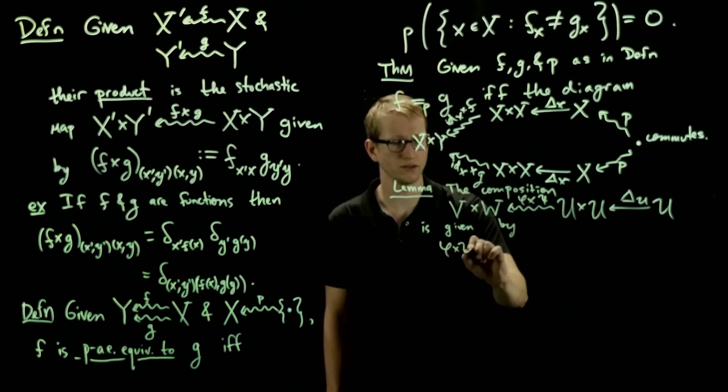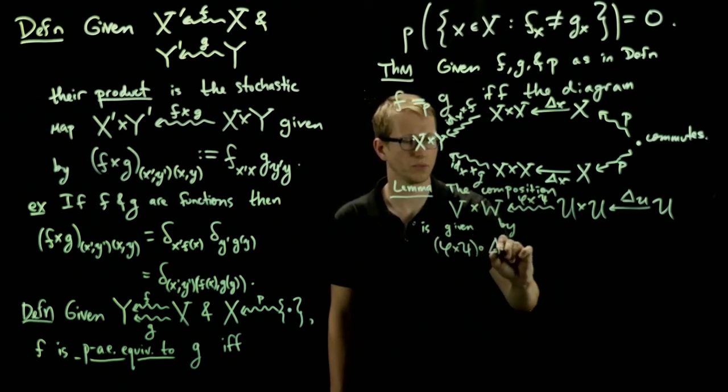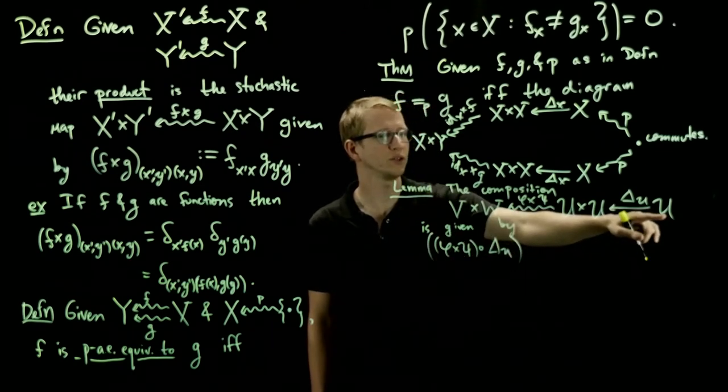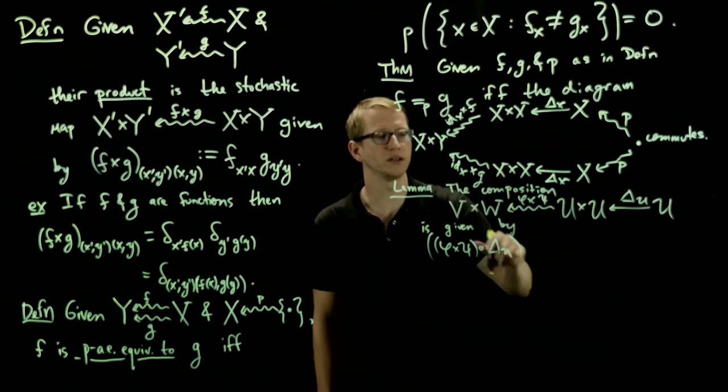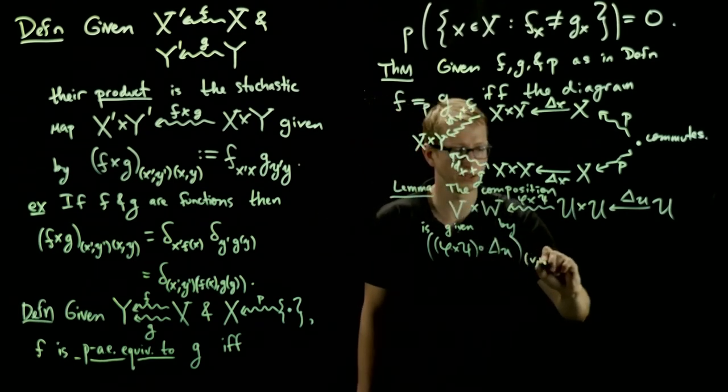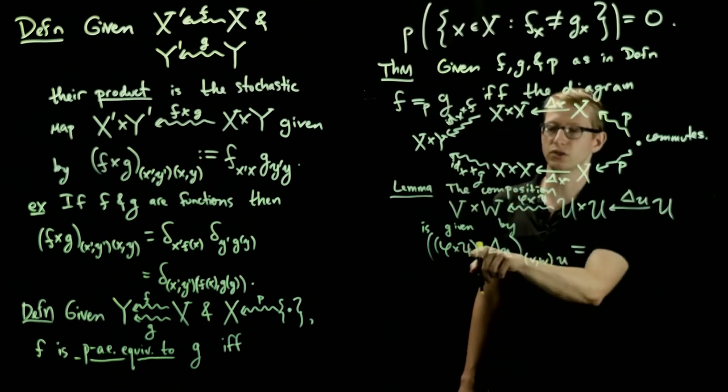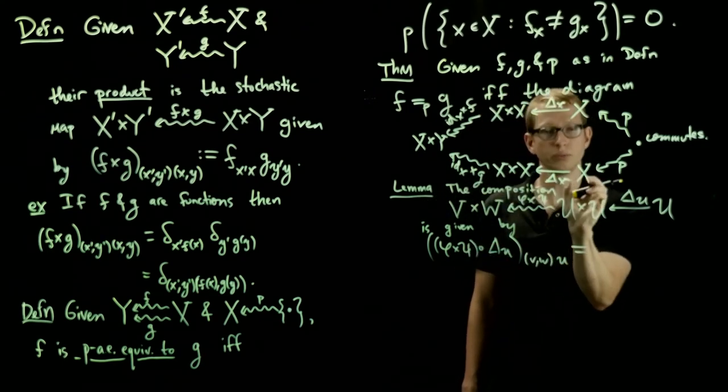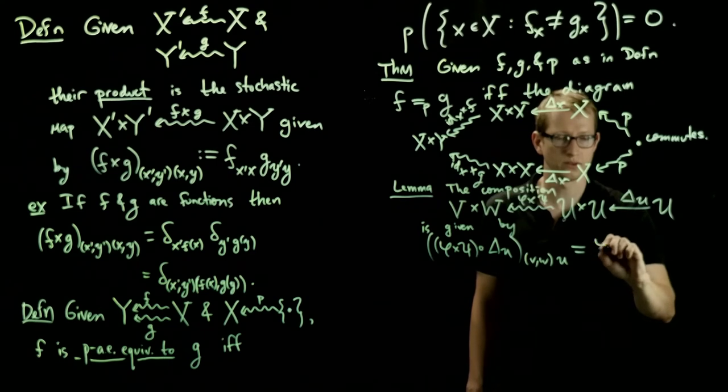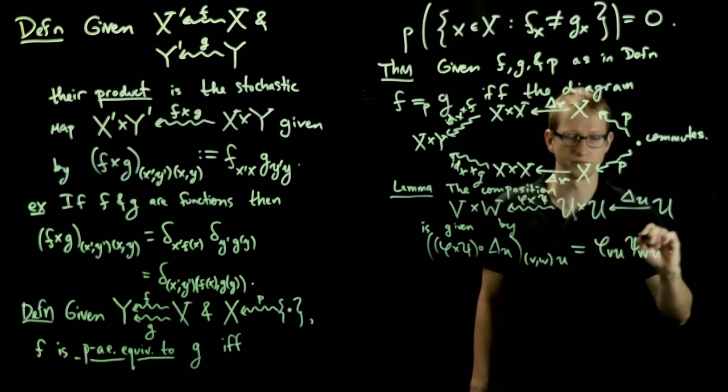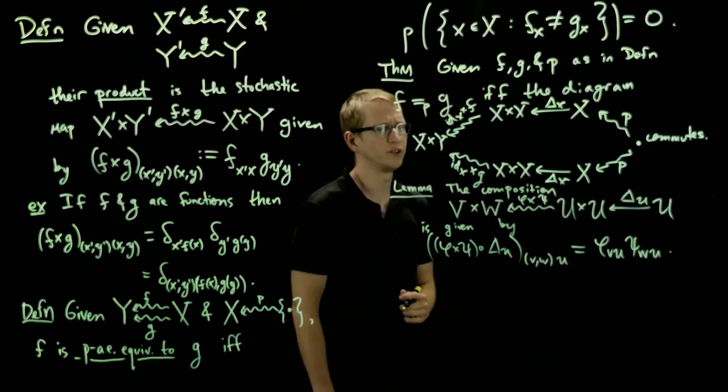So we take φ cross ψ, compose with this diagonal. And how do we evaluate this? Well, the domain has a u and the codomain has a v and a w. So we can evaluate it at (v, w, u). And the claim is that this is given by taking just the product of these, where two of the points happen to match up. So this is φ_vu, ψ_wu, for all v, u and w.